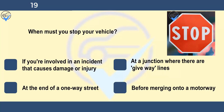When must you stop your vehicle? If you're involved in an incident that causes damage or injury, at a junction where there are give way lines, at the end of a one-way street, or before merging onto a motorway. You must stop your vehicle when signalled to do so by a police or traffic officer, traffic warden, school crossing patrol, or red traffic light. You must also stop if you're involved in an incident which causes damage or injury to any other person, vehicle, animal, or property.